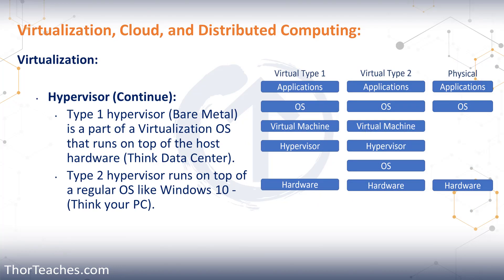We talked about the different types of hypervisors — type one and type two. Type one is what we would have in our data center: hardware built specifically for virtualization. It has the hardware, then it has the hypervisor, and on top of that we build all the virtual machines. This is also what all the cloud providers use. A type two hypervisor is what you and I would have on our own systems — I have my PC, I have my operating system, and then as an application on that operating system, I have a hypervisor, and using that hypervisor I can build virtual machines on my system.